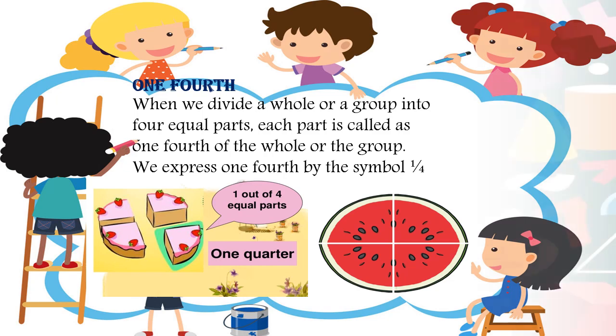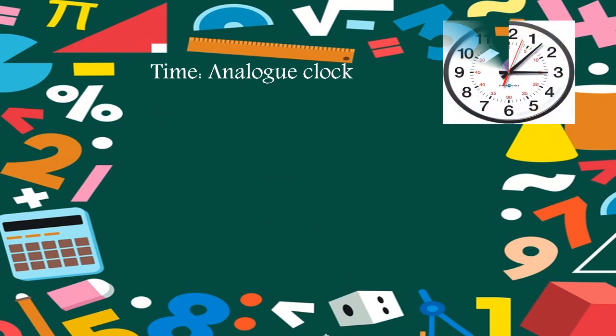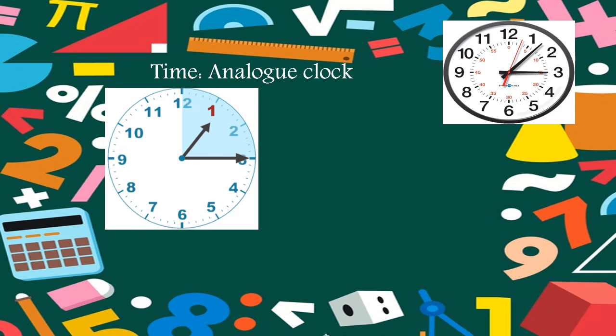Now remember we discussed the analog clock. The analog clock has three hands: the minute hand, the hour hand, and the second hand. Can you see the analog clock and tell me what the time is? It is quarter past — quarter past one. The clock is circular, and one-fourth of the circle is completed by the minute hand — it has reached the three, meaning 15 minutes past. So we call it quarter past one.